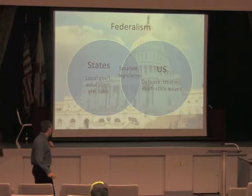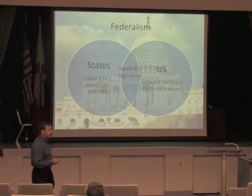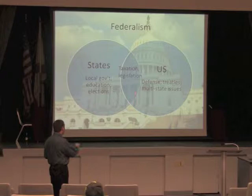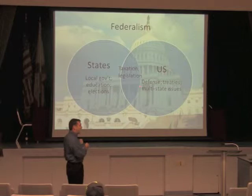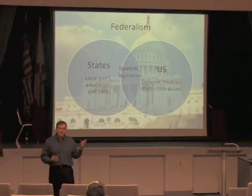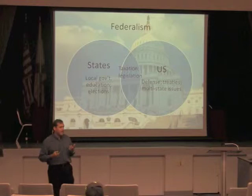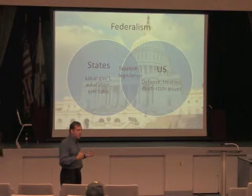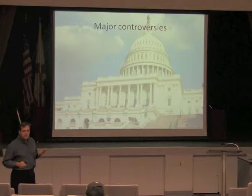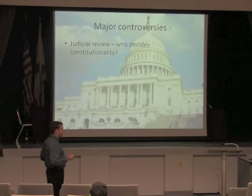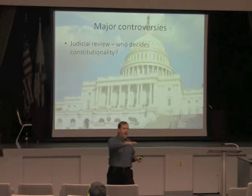States are also in charge of running elections. But there's also a slice where both levels hold power — for example, both can levy taxes. Those with a job pay federal taxes; those buying things in Florida pay state taxes. Both have legislative power and can pass laws. There have been a series of controversies since the ink dried on the Constitution. One big problem is the idea of judicial review — what if Congress passes a law by a majority vote, the president signs it, but it impinges on your freedom of speech? You say that goes against the Constitution — you can't do that.